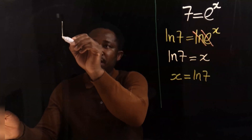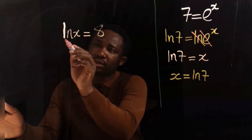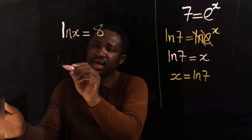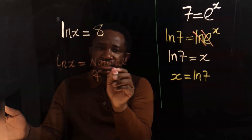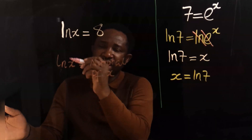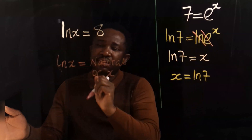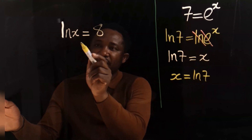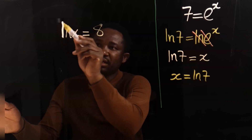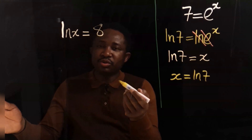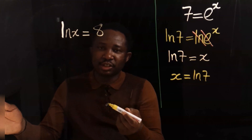Let's consider that the natural log of x is equal to 8. This ln is written as ln x, which simply means the natural log of x. This is not i — this is l. Our aim here is to make x the subject. x is held here by natural log.